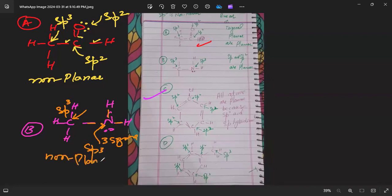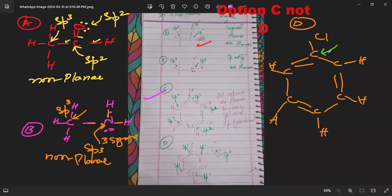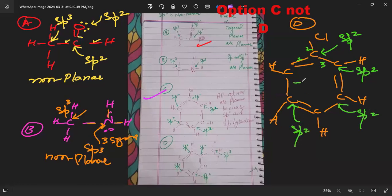Now let's look at option D. We can redraw it for convenience, with chlorine and several hydrogens. This carbon has three sigma bonds — sp2 hybridized. This carbon also has three sigma bonds — sp2 hybridized. Every carbon in the structure has three sigma bonds and is sp2 hybridized.